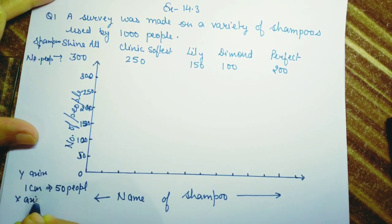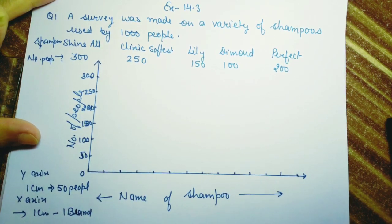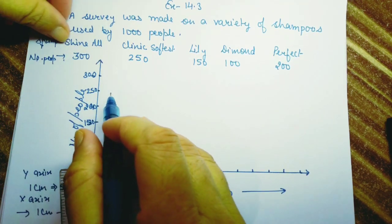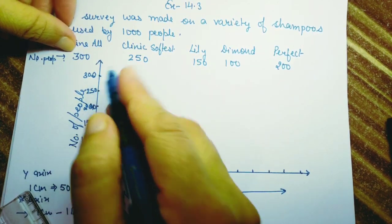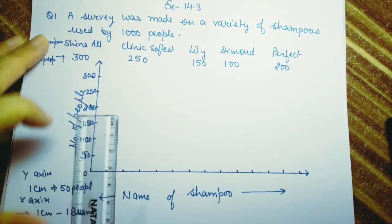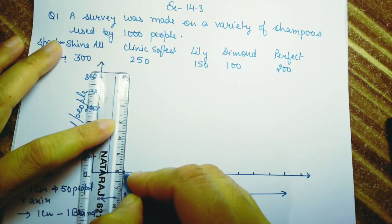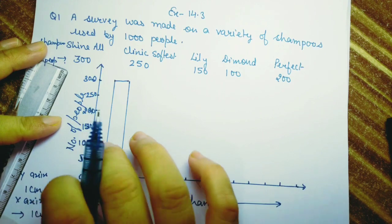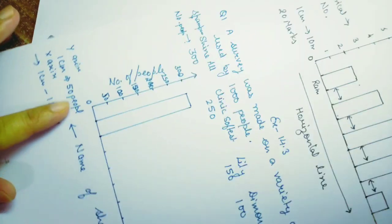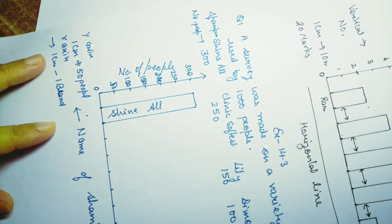The X-axis scale is 1 centimeter equals 1 brand. For the first bar, Shine All, leave one block and then draw the bar up to 300. Below or within the bar write the shampoo name: Shine All.